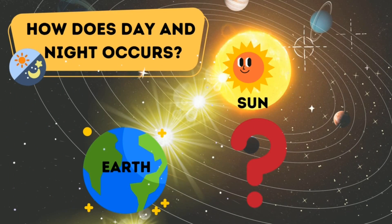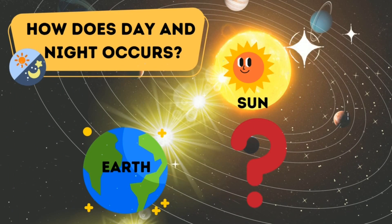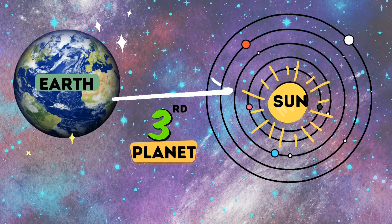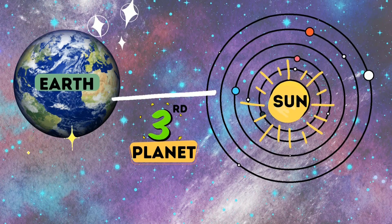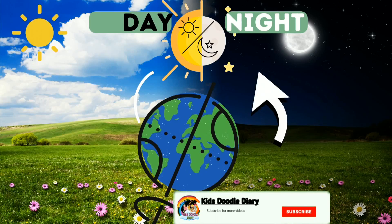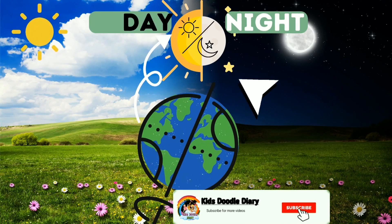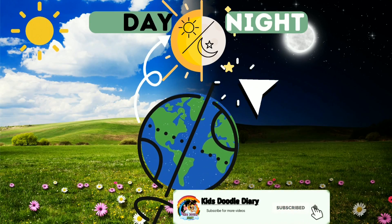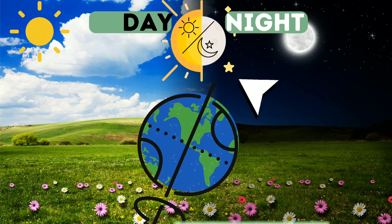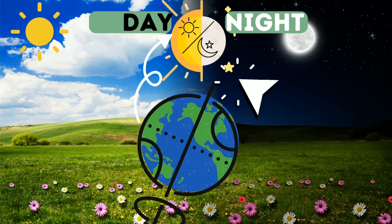How does day and night occur? Let's see. The earth is the third planet from the sun. Day and night occurs due to the rotation of the earth on its axis.